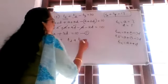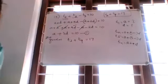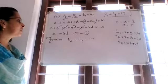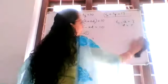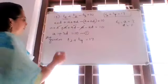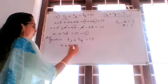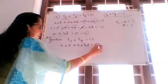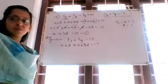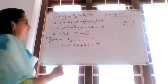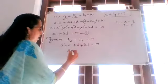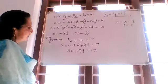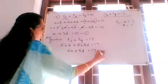Also given: T2 plus T9 is equal to 17. T2 we can replace as A plus D, and T9 is A plus 8D. So A plus D plus A plus 8D gives 2A plus 9D is equal to 17. Let it be equation number 2.